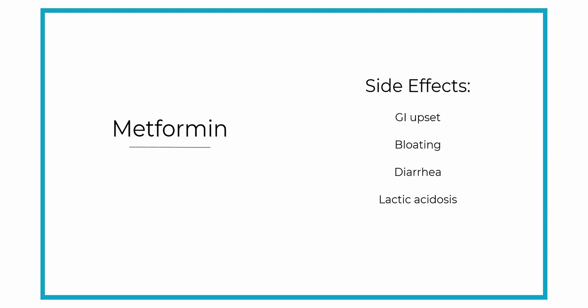Some side effects that can be associated with metformin are GI upset like bloating, diarrhea, nausea, and vomiting. Remember, it's decreasing the amount of glucose that's absorbed in the small intestines, so any interference with the intestine can cause some GI upset.